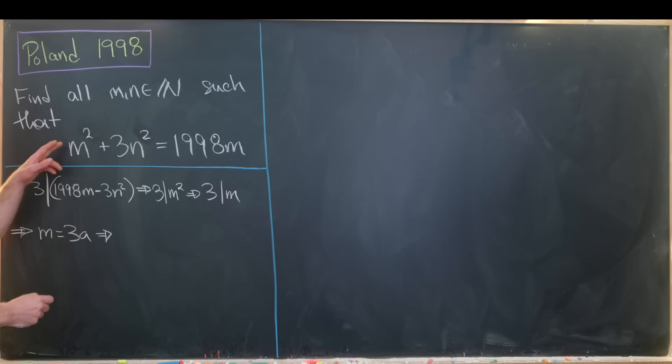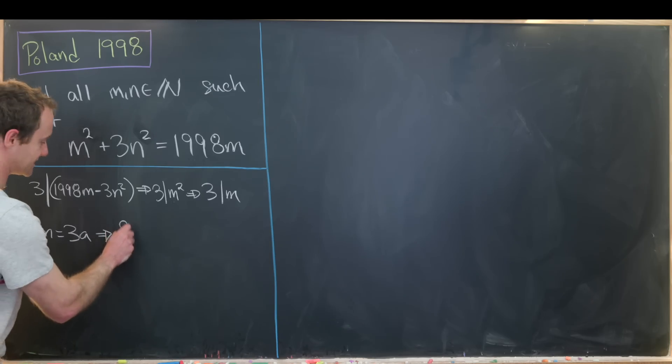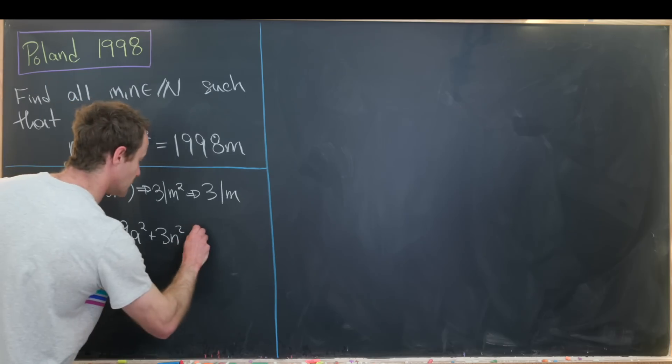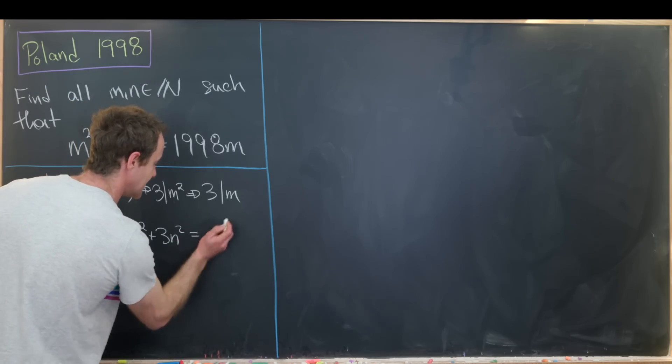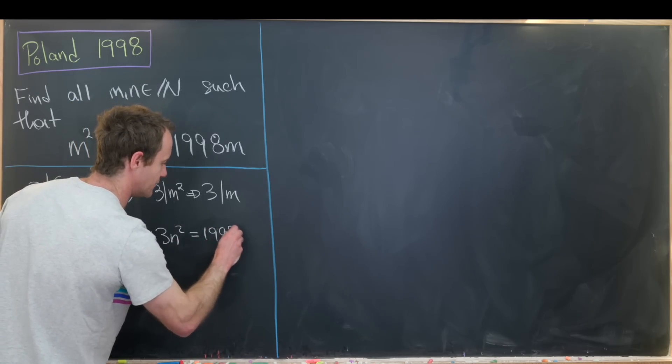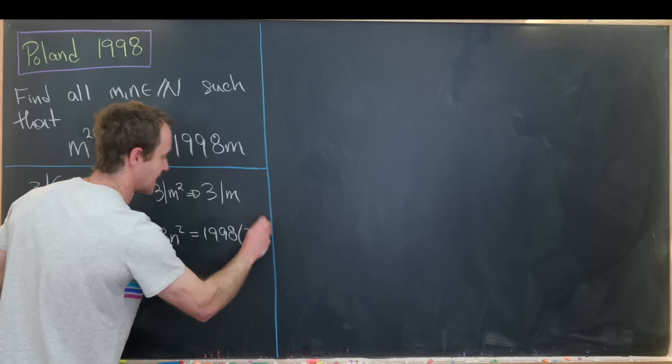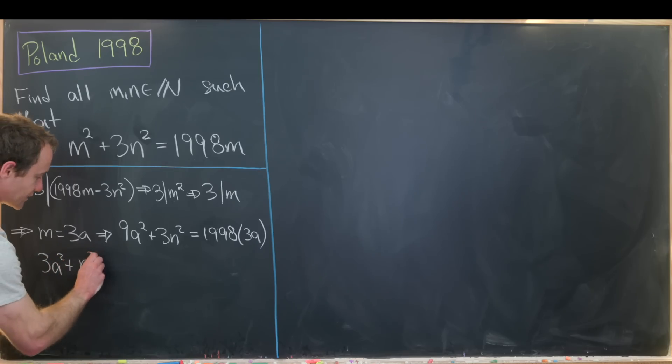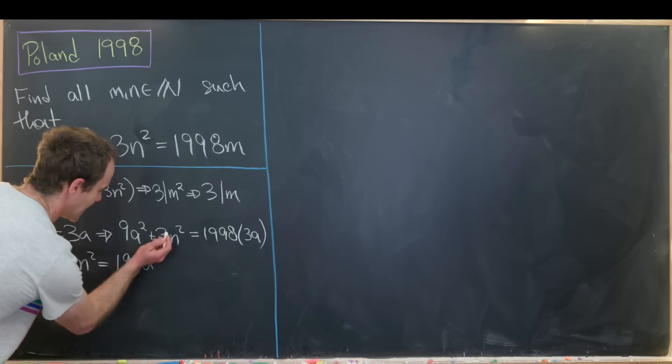But now we can say this means that m equals 3 times a for some natural number a. And now let's plug that back into our original question. So that gives us 9a squared plus 3n squared equals 1998 times 3a. Now we can cancel a 3 from all parts of this equation.